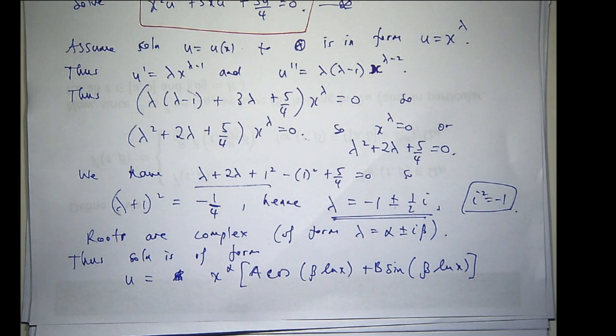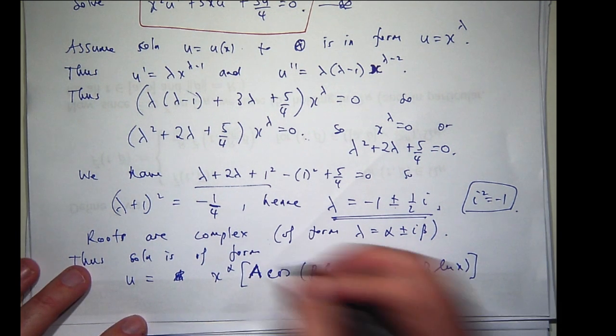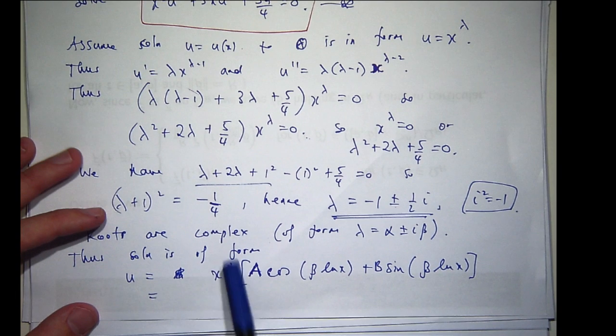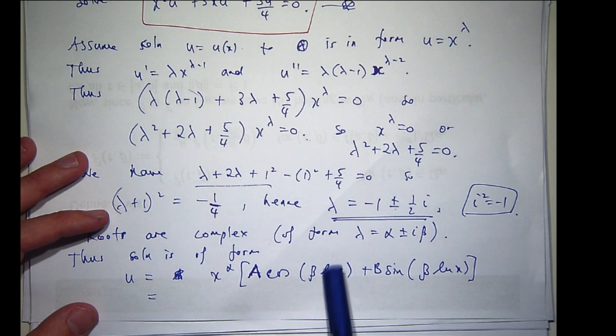This is a slightly more abstract version of the version you saw in first year. In first year, you would have an exponential here, and you wouldn't have the logarithm here. You'd just have βx and βx.